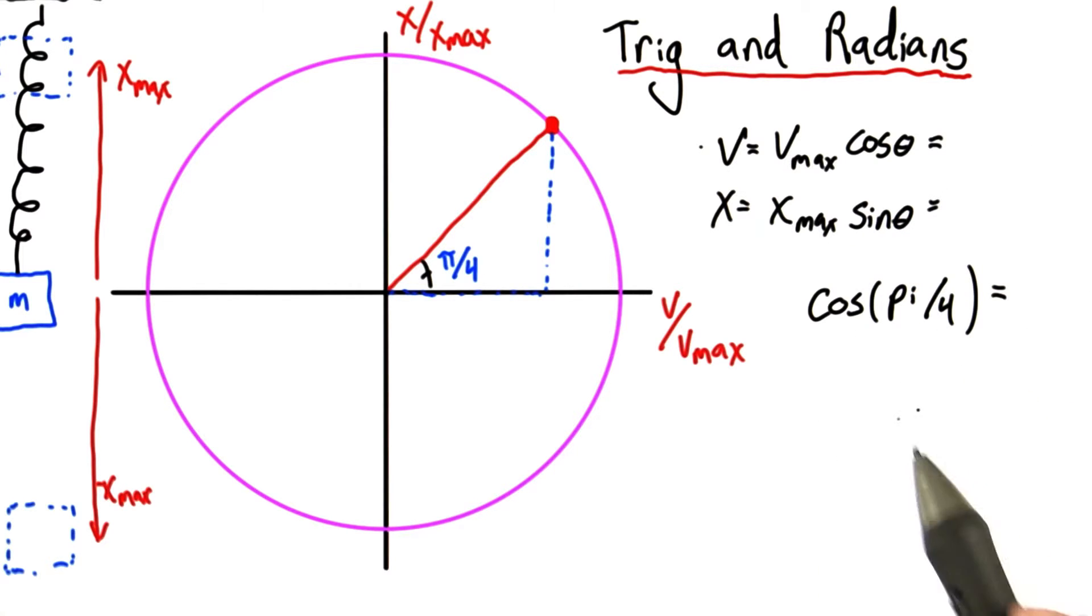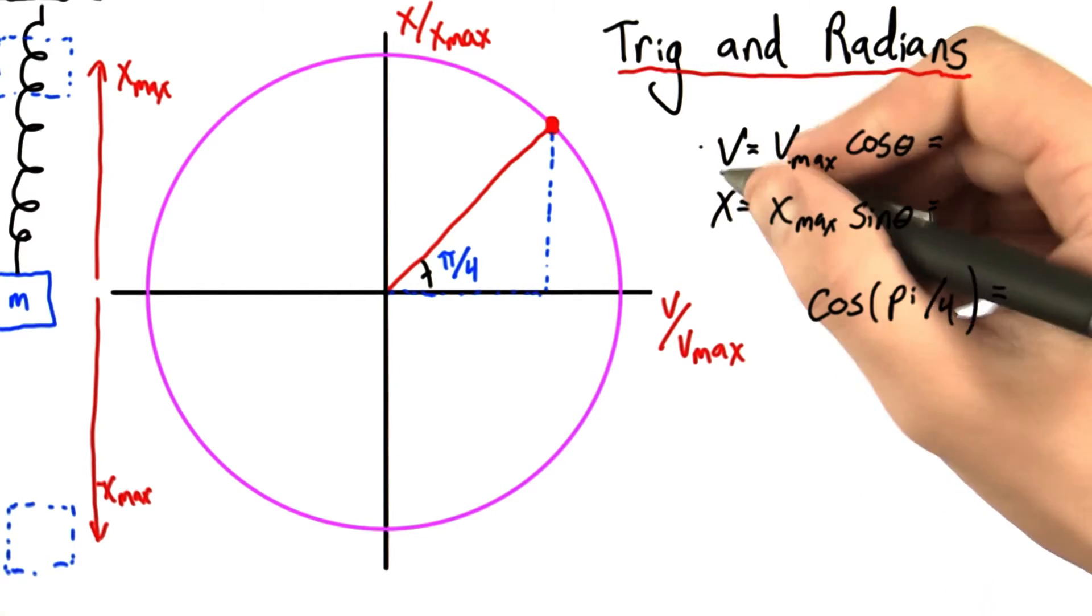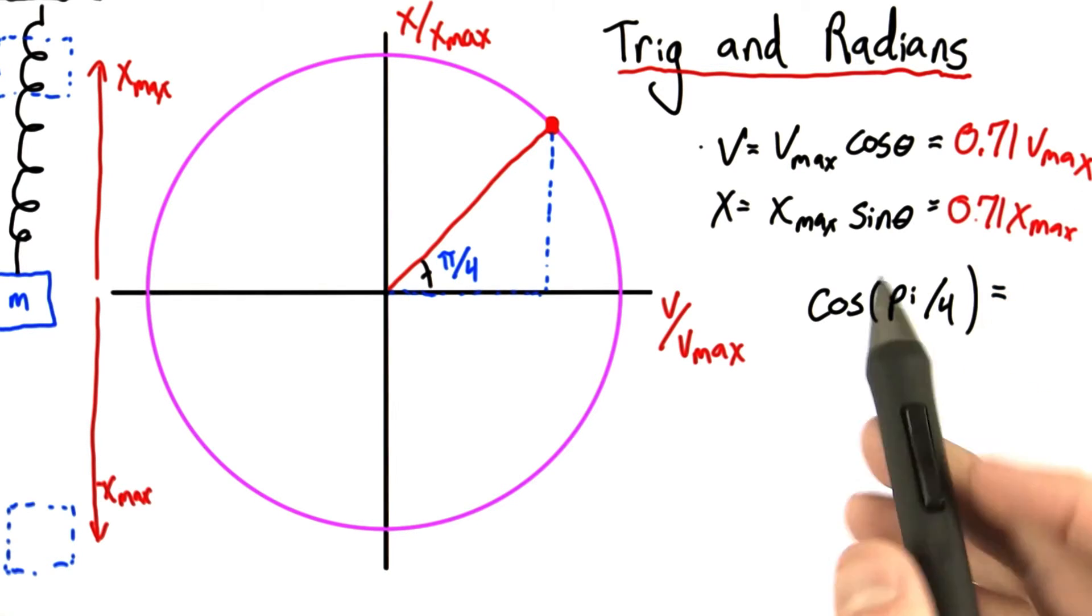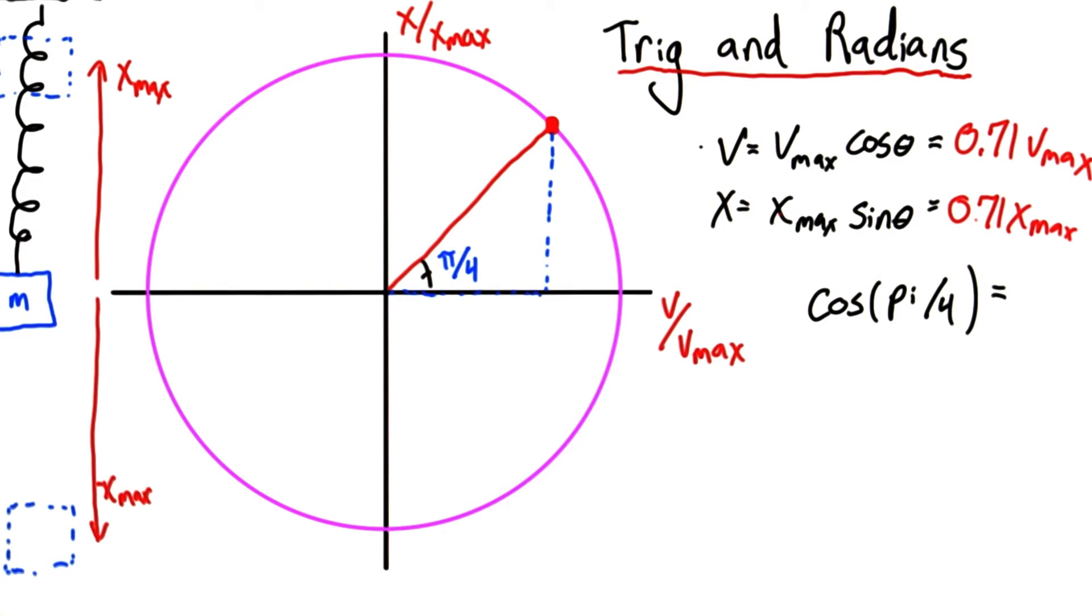So if you type this in, you'll find that the velocity at this point is 0.71 v max, and the position is 0.71 times x max. I've just plugged in cosine of pi over 4 and sine of pi over 4. And for this angle, cosine and sine happen to be completely equal.